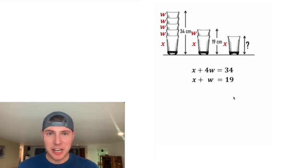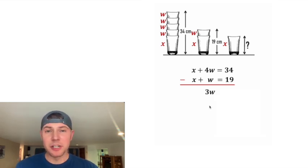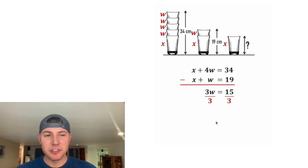In order to solve this, we're going to use elimination. We're going to subtract the second row from the first row. So this X minus X, those cancel each other out. And 4W minus 1W is 3W. And then on the right-hand side, 34 minus 19 is 15. And in order to solve for W, we can divide both sides by 3, and